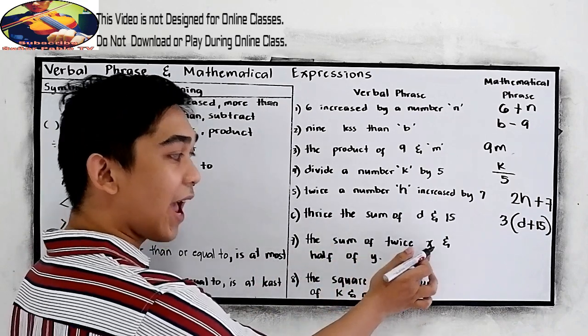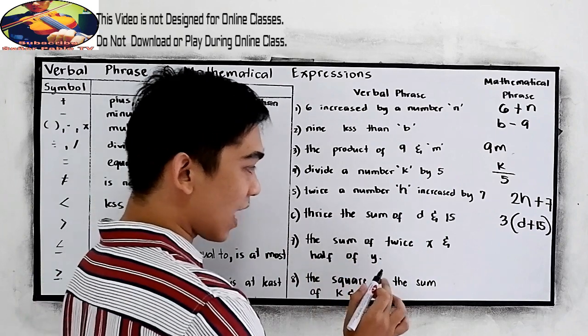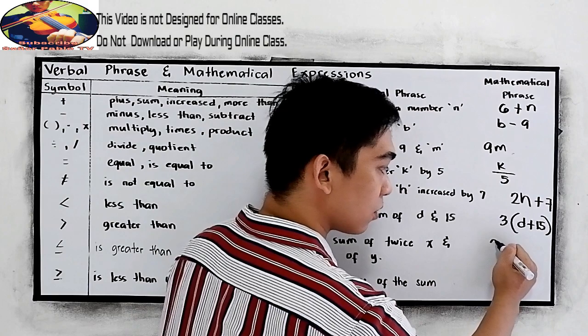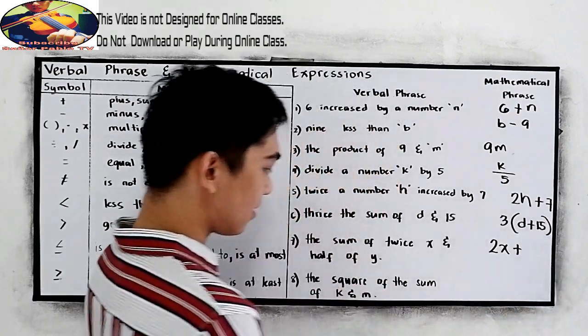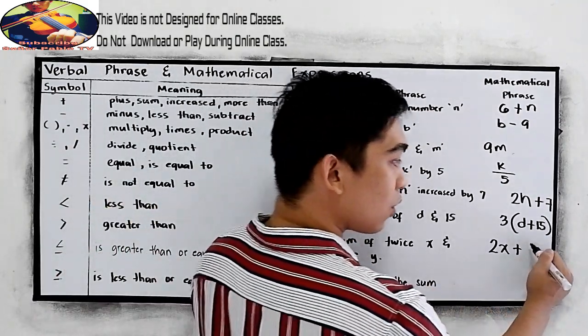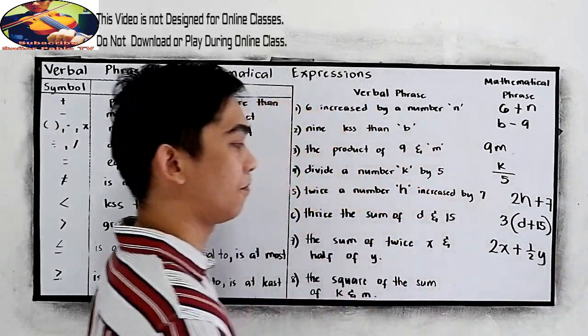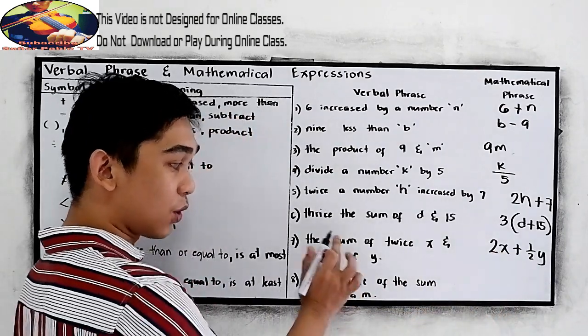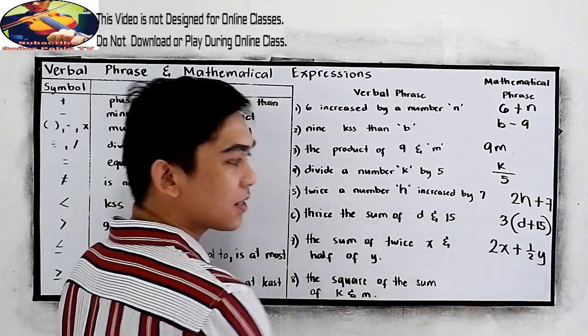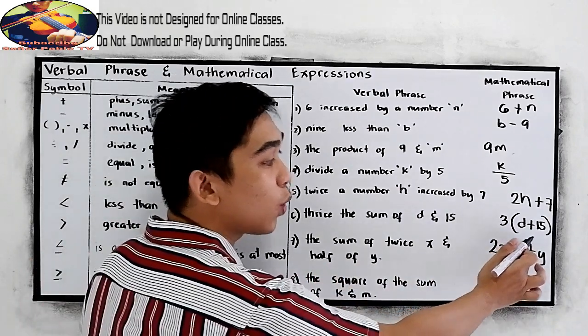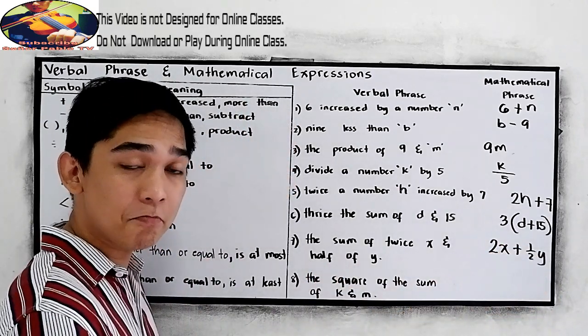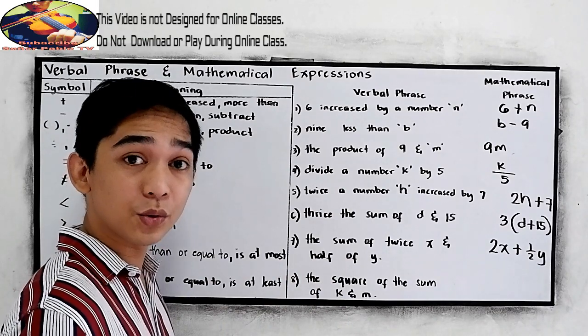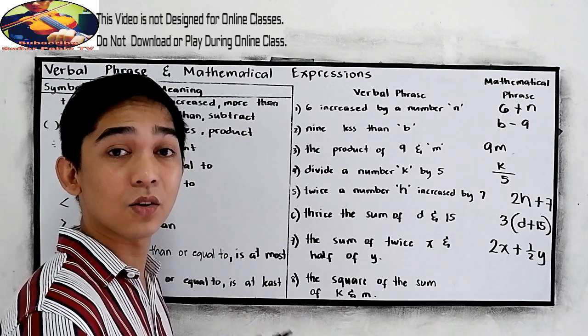And number seven. The sum of twice x and half of y. So, we have twice x and half of y, one half of y. Twice x, that's why we have 2x. We are going to get the sum, so we have plus. Half of y, one half of y. Or it can be y over two. 2x plus y over two, it's still the same. That's still correct.